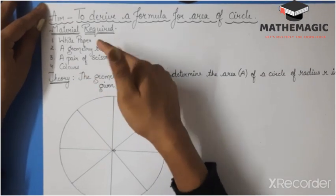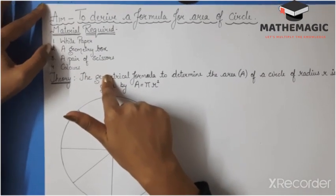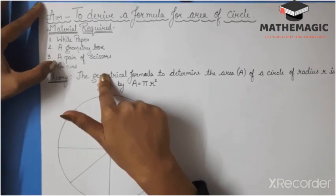Materials required are as follows: first, a white paper, then a geometry box, a pair of scissors, and colors.